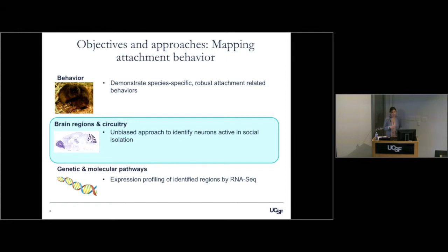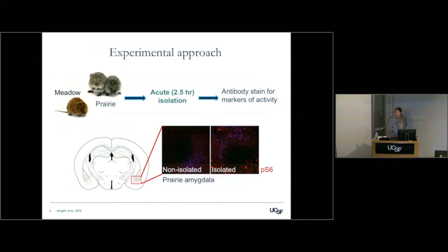This is important because what I want to study is social isolation. For us, social isolation only becomes meaningful in the context of an attachment. If we care about who we've partnered with or who we've grown up with, what we care about when we lose them is because we've lost this attachment. Prairie voles make this ideal model to study how that loss is meaningful for social isolation.